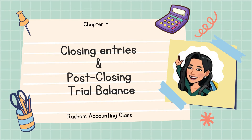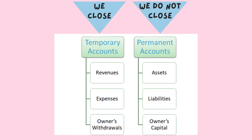Hello, today we're going to start chapter 4. We're going to talk about closing entries and how to prepare post-closing trial balance. In order to measure each period's net income separately from income of all other periods, revenues and expenses are closed. The closing process is a step in the accounting cycle that occurs at the end of the period. The closing process consists of journalizing and posting the closing entries to set the balances of the revenues, expenses, income summary, and withdrawals accounts to zero for the next period.